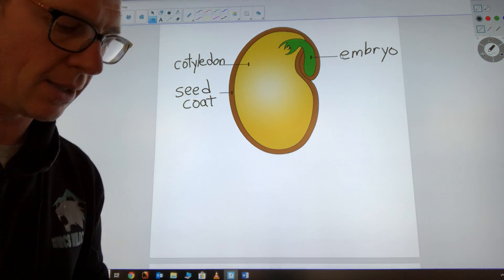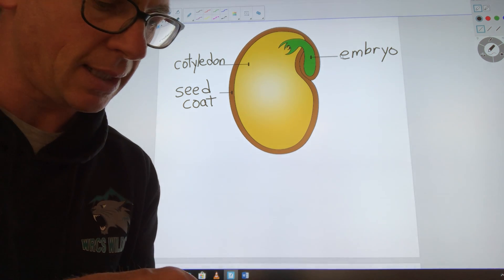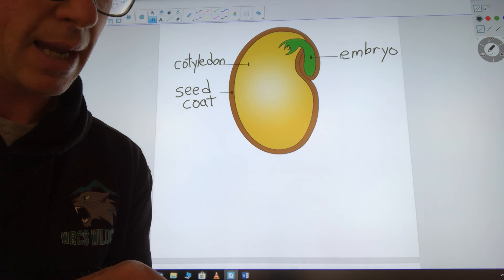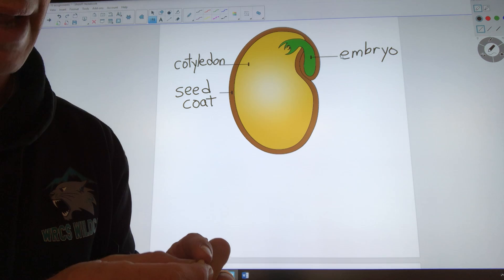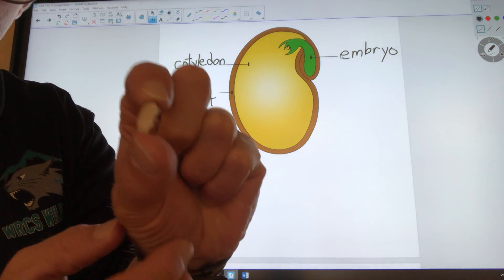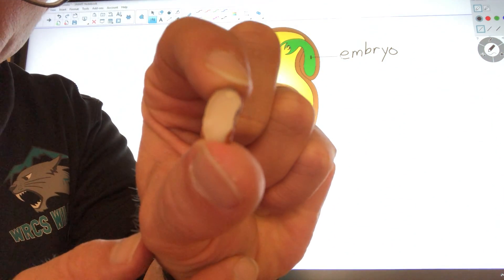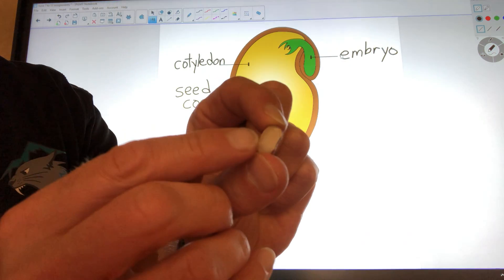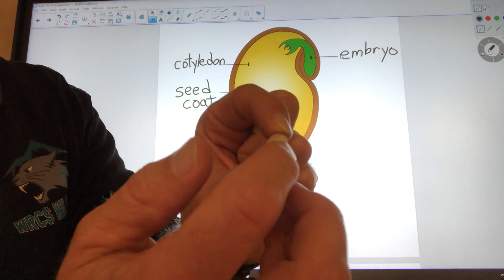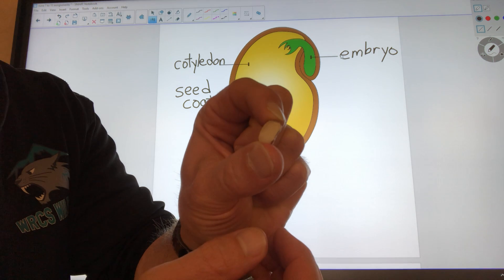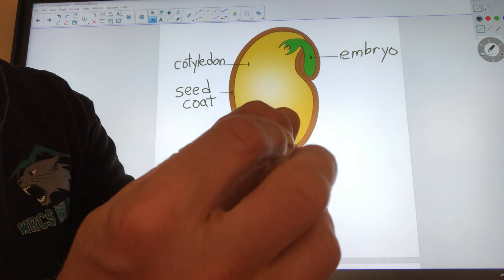So what I've done here is I've actually taken a seed, one of our bean seeds, and I just broke it in half. So it's really small and you might not be able to see it very well, but you can see on the outside this part that kind of peels away. That's the seed coat.